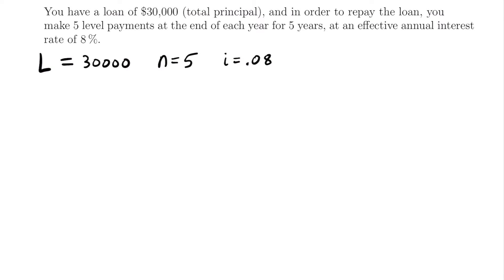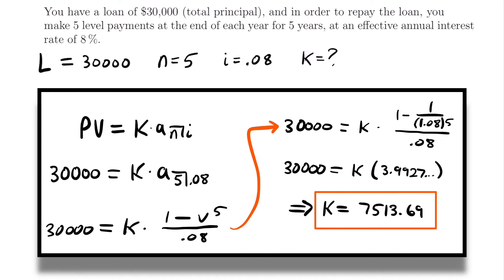That's the first thing we want to figure out before we can look at the outstanding balance, the interest accumulated, and the principal paid at different times. In order to find payment K, note that a loan repayment problem is really just a present value of an annuity problem. This $30,000 is the present value today that we want to pay off in five years with five level payments. It's a basic present value annuity problem where we solve for the payment amount. You can pause the video to look over that work.